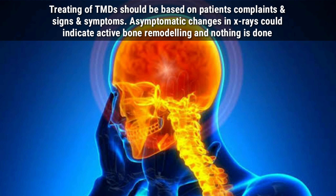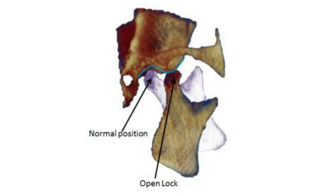As long as there is no pain or restriction in jaw movement, any change in condyle shape on x-ray or having clicking sounds is not considered a TMD. There is another condition where the TMJ is in front of the eminence and cannot move back, preventing the patient from closing their mouth. This condition is called open lock, open dislocation, or subluxation, and it happens because the muscles of mastication keep pulling the joint forward.